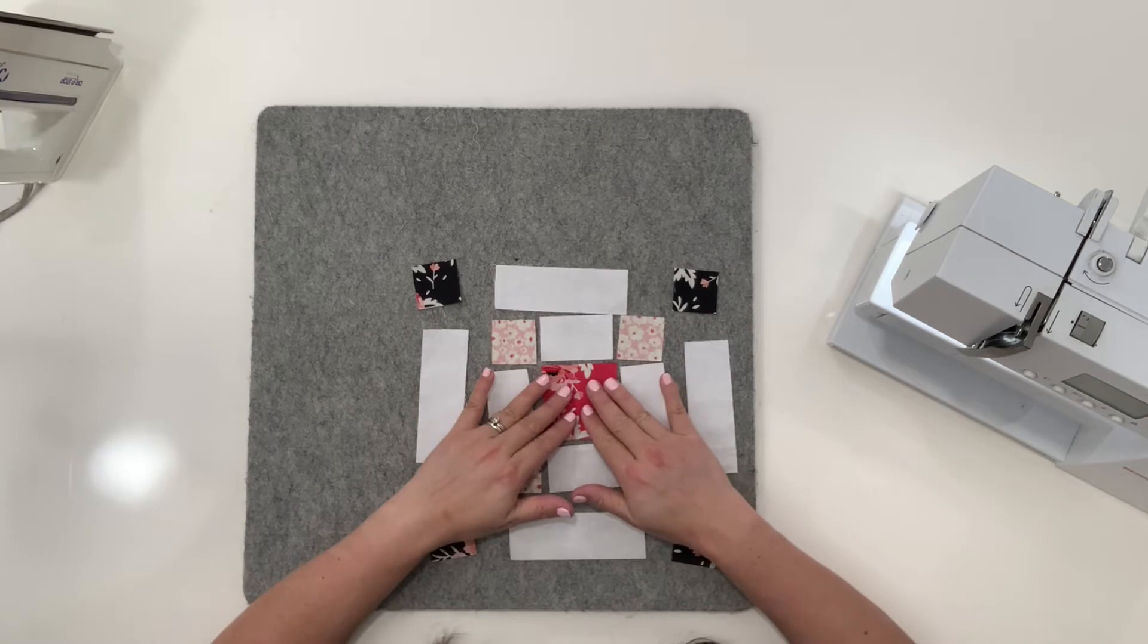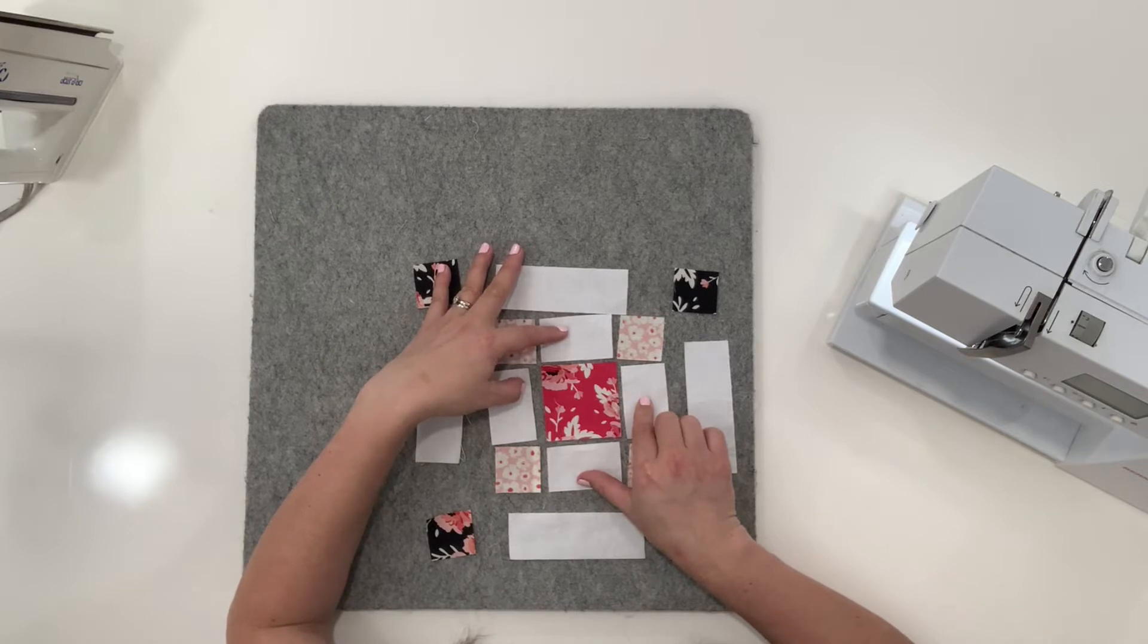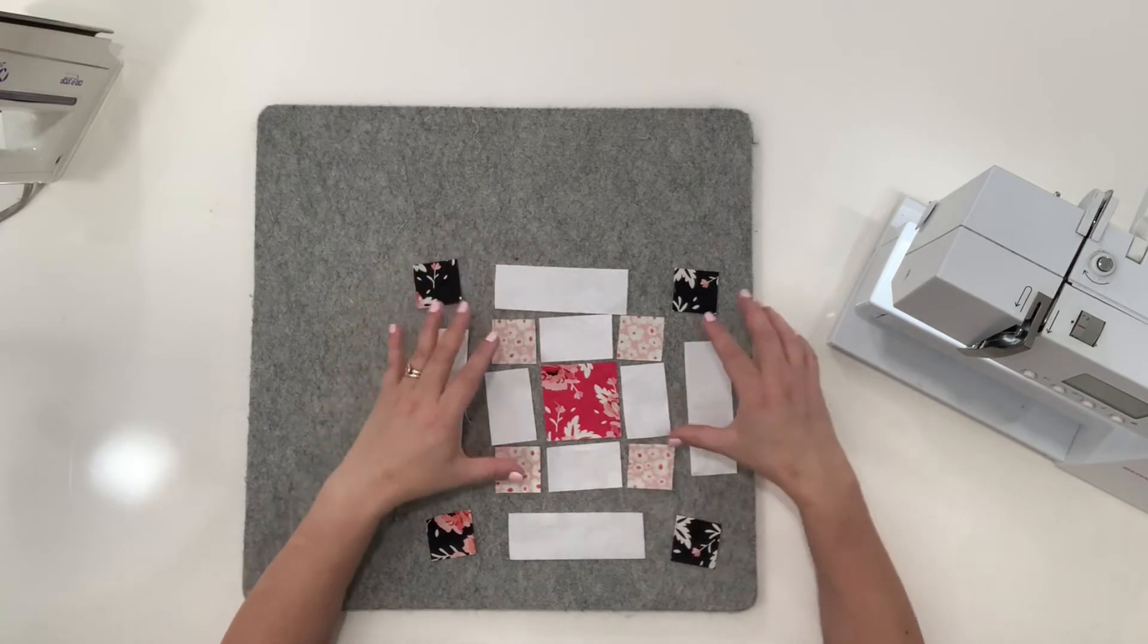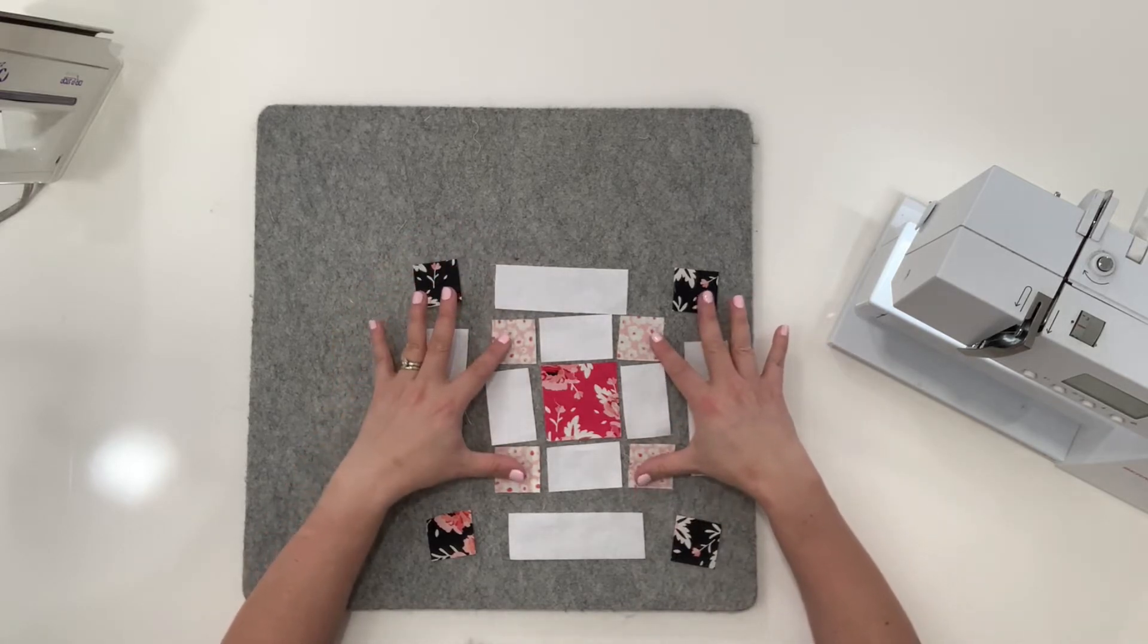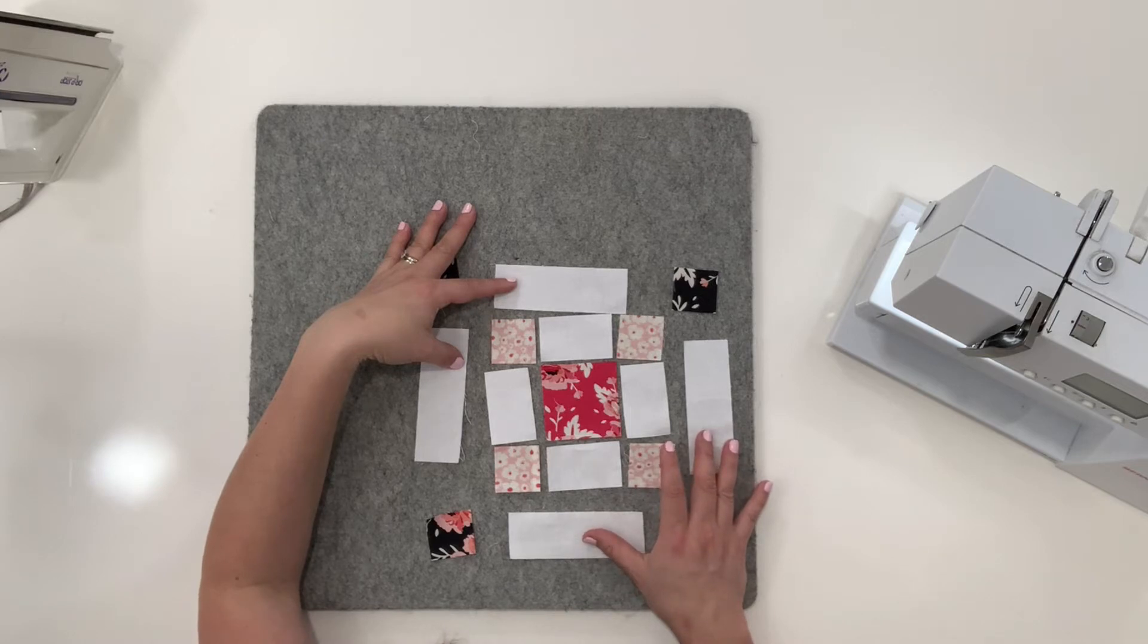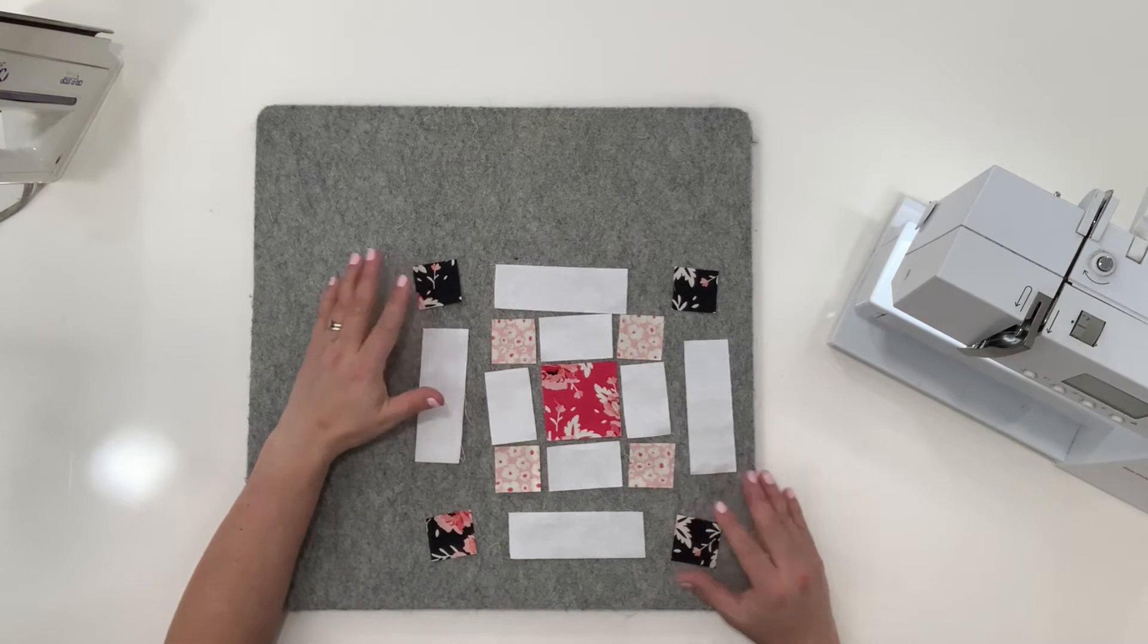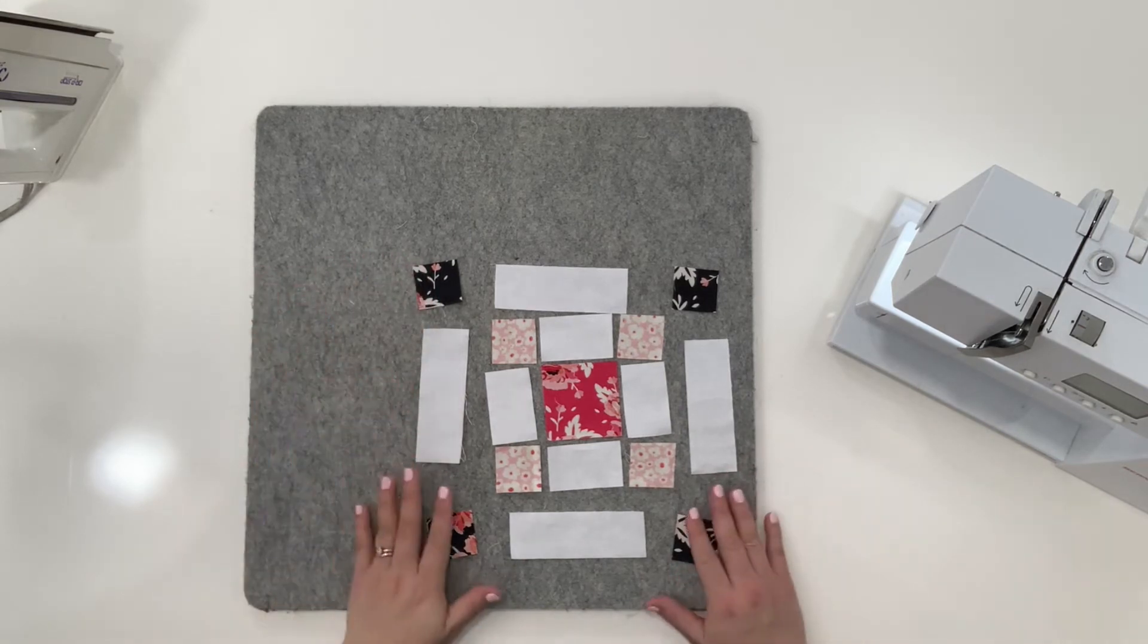Your center piece is a two and a half inch square. You need four white pieces, and those are one and a half inch by two and a half inch. You need four of these little squares. These are one and a half inch pink squares. Then you need four of these white big pieces, and these are one and a half by four and a half inches. And then you have four black squares that are one and a half by one and a half.